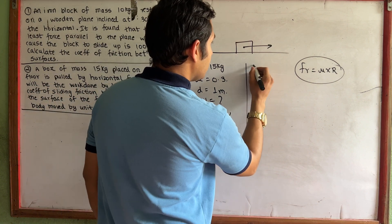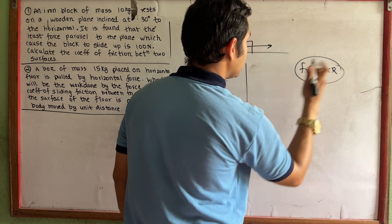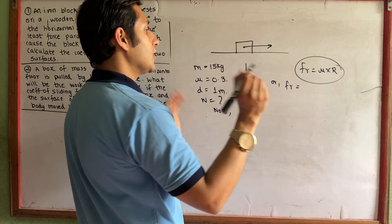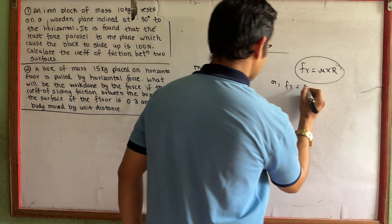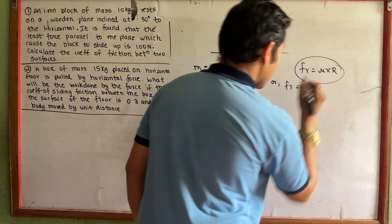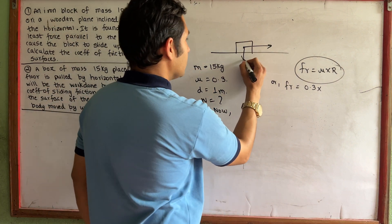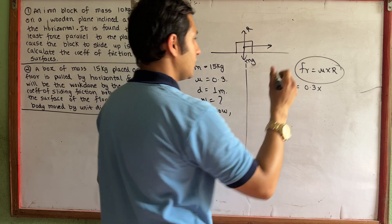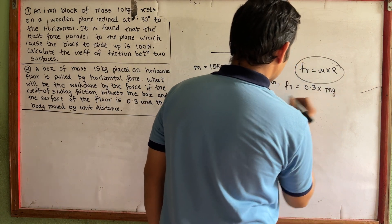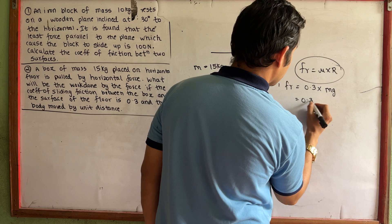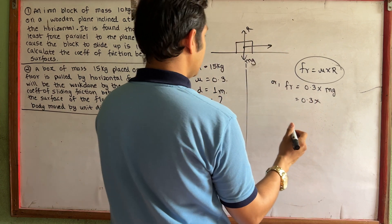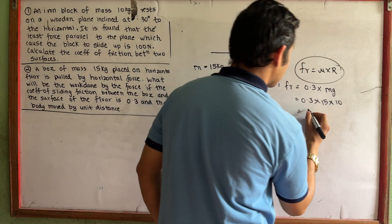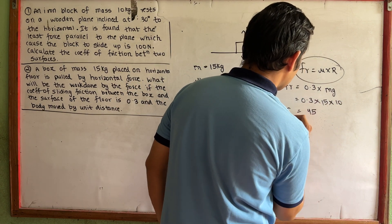I am going to start this. FR is going to be mu into R. Friction equals mu into R. Mu is 0.3. R means Mg. So FR equals 0.3 into Mg, where M is 15 and g value is 10, giving 0.3 into 15 into 10 equals 45.